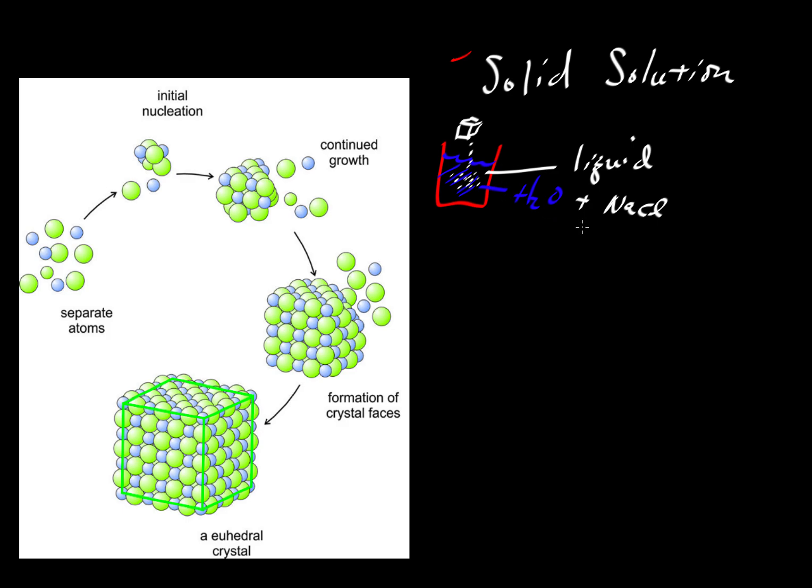Now we call it a single phase because we cannot separate these two by mechanical means. We have another YouTube video where we define a phase, and a phase is something that is mechanically separable. We cannot use mechanics to separate water and sodium chloride that are dissolved together in that liquid.